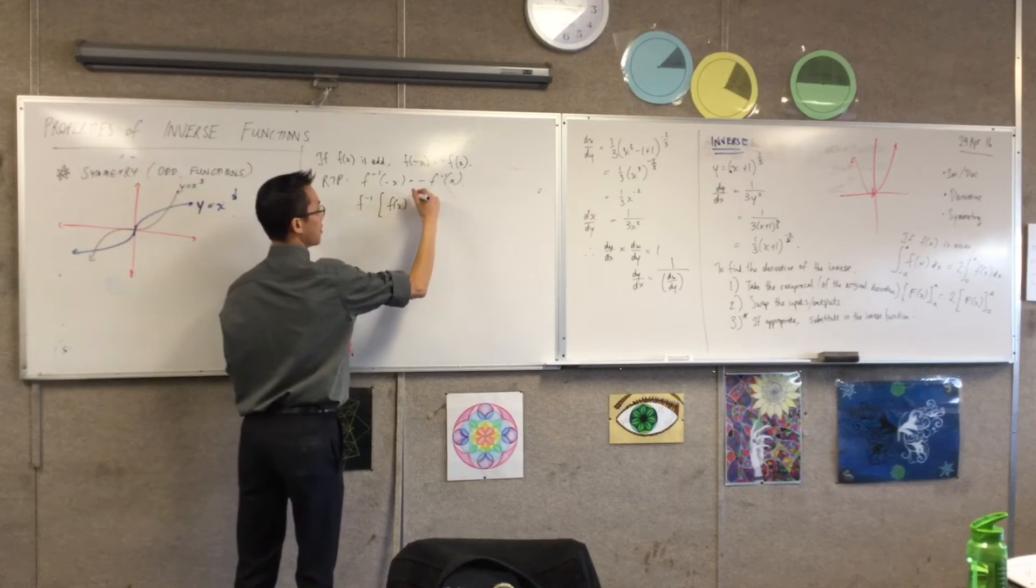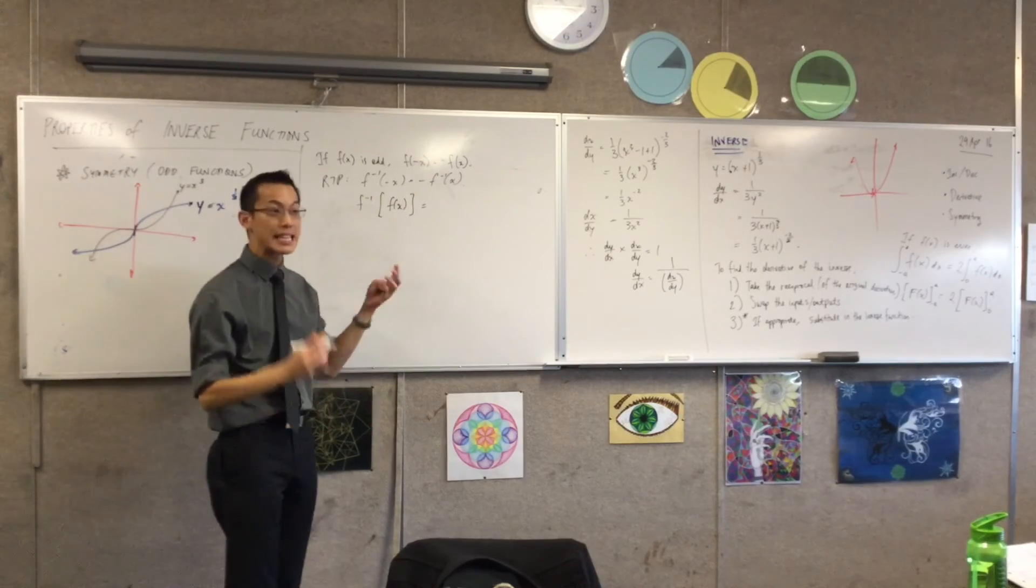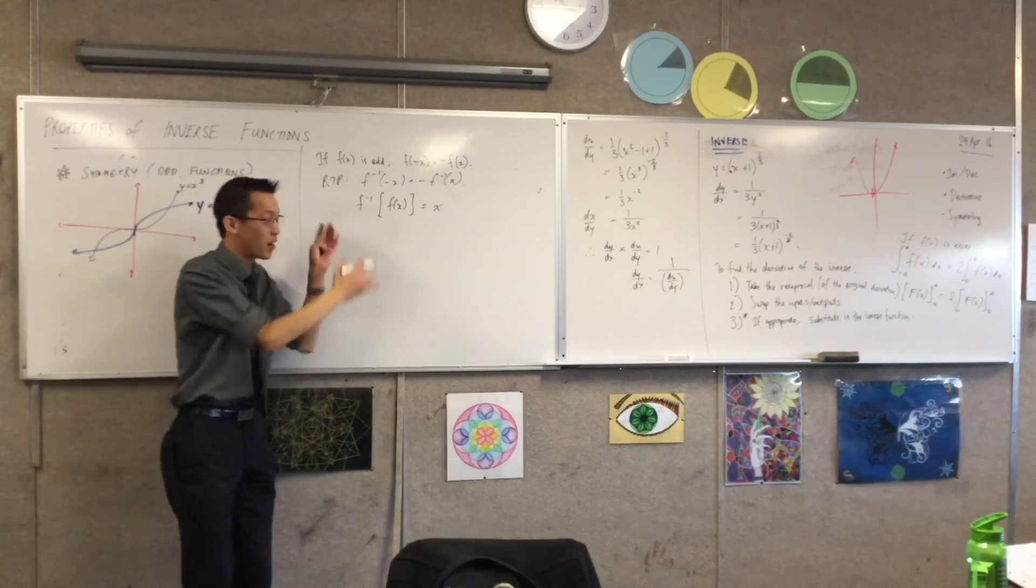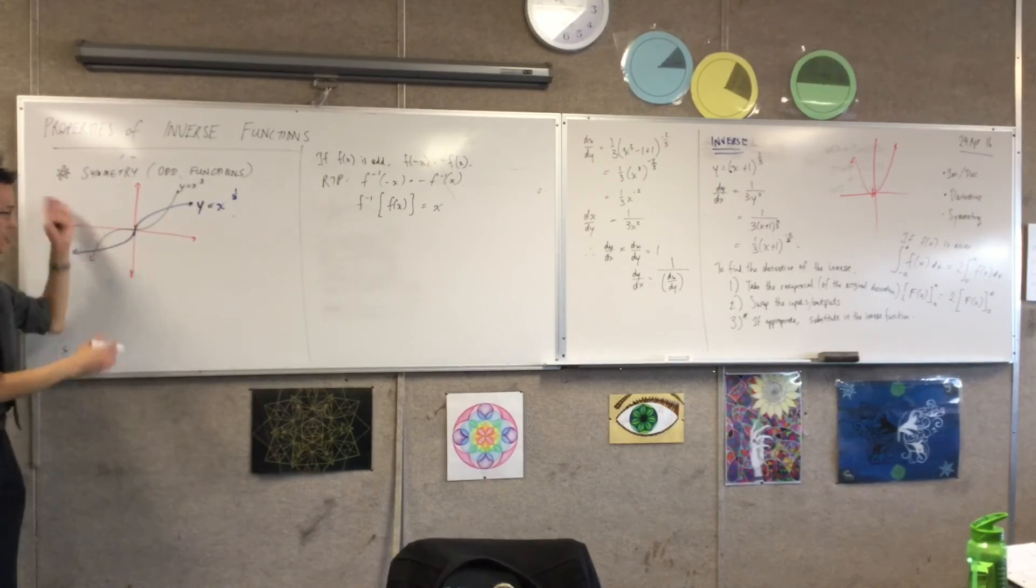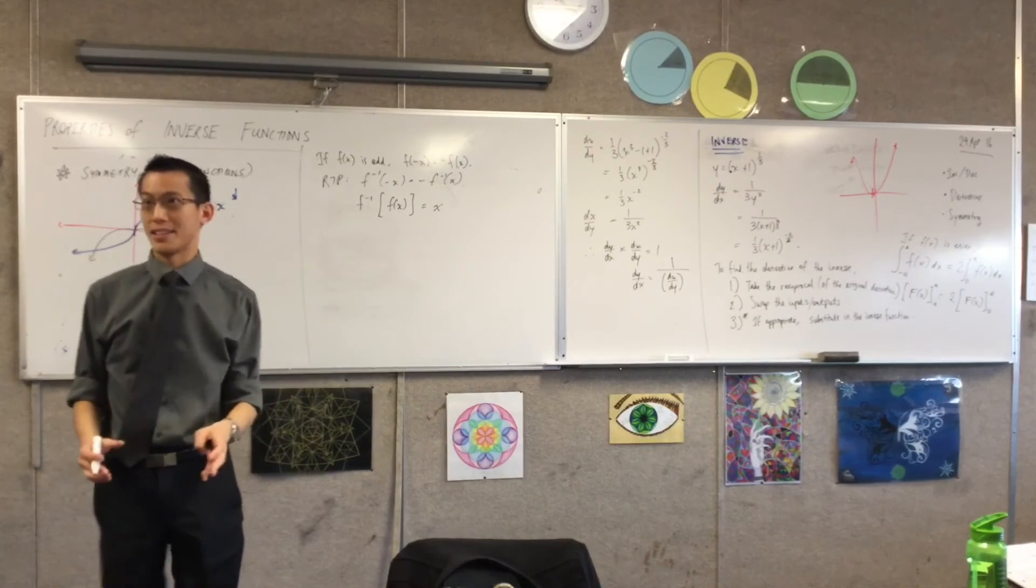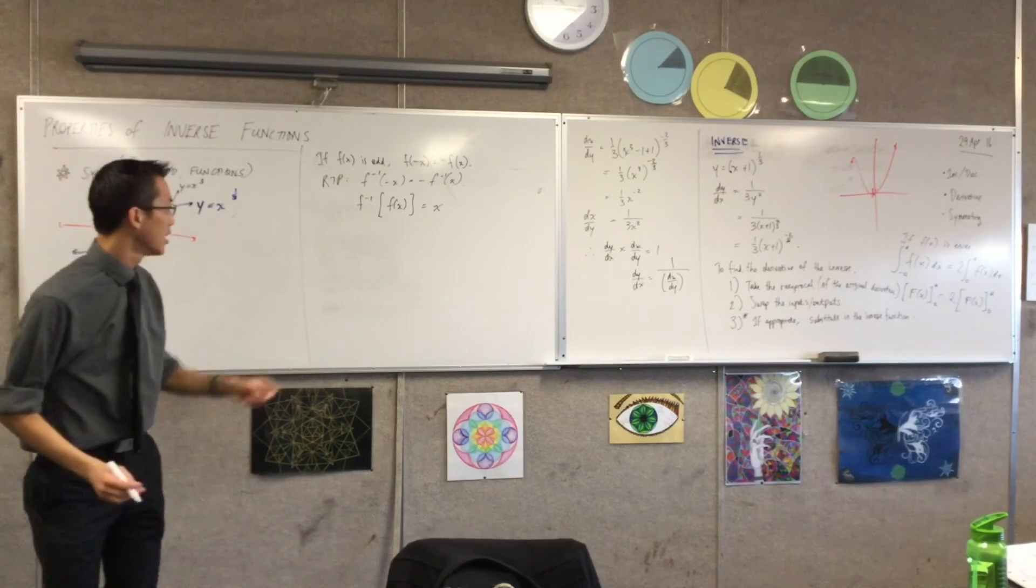Very good. This, this is the definition of an inverse function, right? This is the algebraic one. This is the geometric one, right? The flipping thing, okay? Now this I know. Every inverse behaves like this, if it really is the inverse, okay? So I know that. That's good.